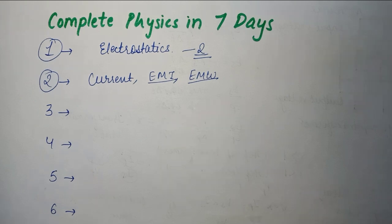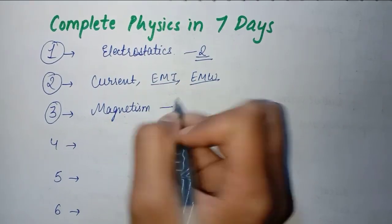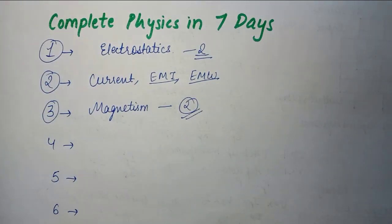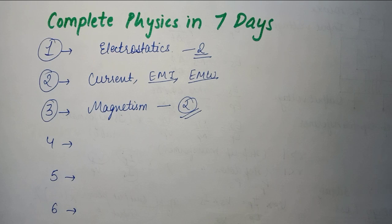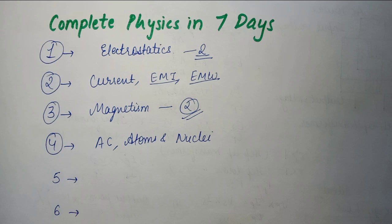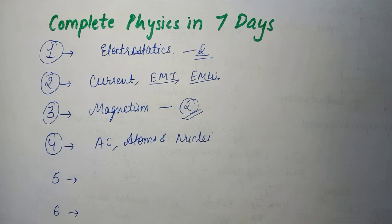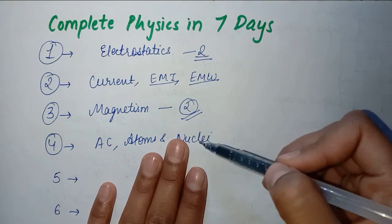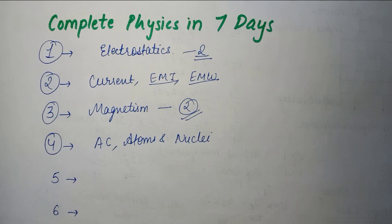Then we will move on to the third day. On the third day, you have to complete your magnetism unit. So you have two chapters. Then on the fourth day, you have to do AC, atoms and nuclei. You will have to get more time, so even if you want to divide it such that you want to do five chapters, you have to cover up.